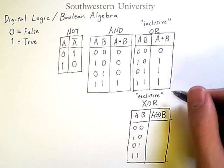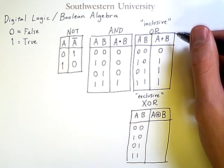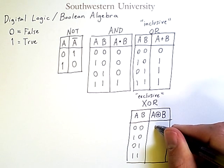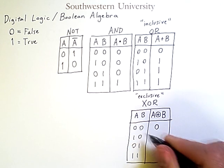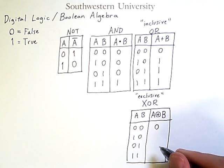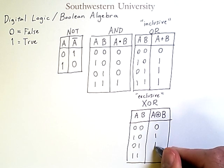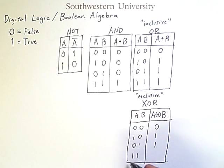Now, the truth table for XOR is the same as that for inclusive OR until the last row. So, if neither variable is true, then the result is false. If exactly one is true, then I will consider those to be true results. But if both of them are true, then I will not consider that to be true.